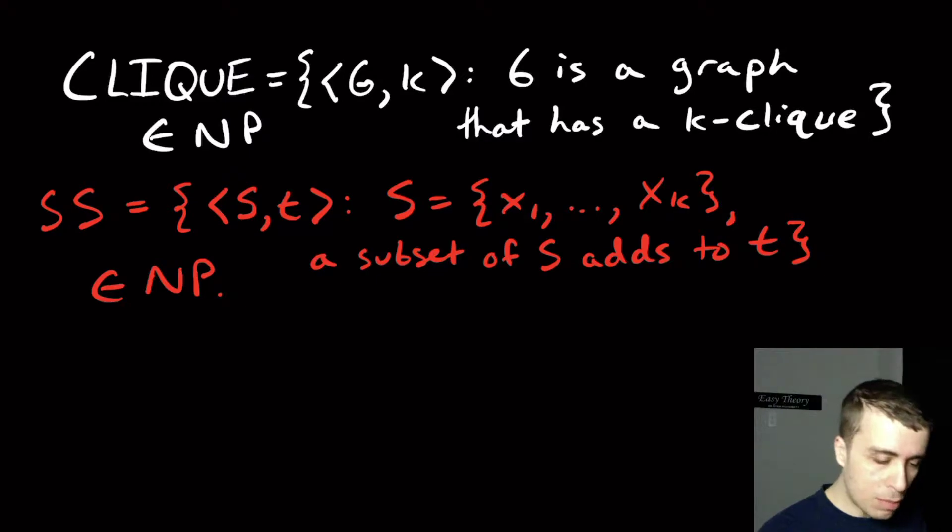And what I want to do is show that both of these are in NP. So we can either do the non-deterministic Turing machine approach and show that it runs in polynomial time non-deterministically, or we can use a certificate and verify deterministically in polynomial time whether or not a given certificate shows that the input is in NP for CLIQUE and the same idea for subset sum.